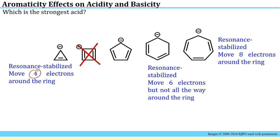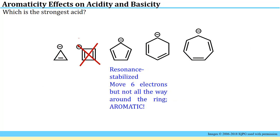For the three-membered ring, the carbanion lone pair plus the pi bond gives four electrons — not a Hückel number for aromaticity. For the five-membered ring with a saturated carbon, moving six electrons around the ring still can't produce an aromatic ring because the sp3 hybridized carbon cannot form pi bonds in any resonance contributor. For the seven-membered ring, moving all electrons around gives eight — also not a Hückel number. However, the last example, cyclopentadiene, has a lone pair on carbon after deprotonation, and moving those electrons around the five-membered ring involves six electrons, just like benzene — giving an aromatic, highly stable anion. Because deprotonation generates such a stable aromatic conjugate base, cyclopentadiene is the most acidic compound.